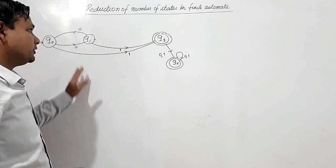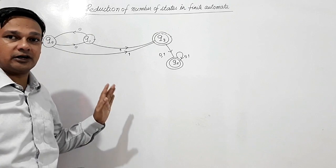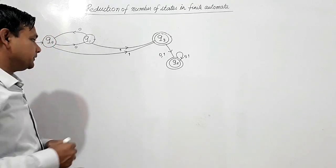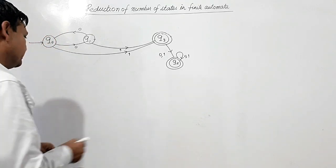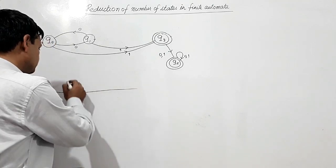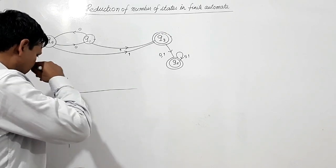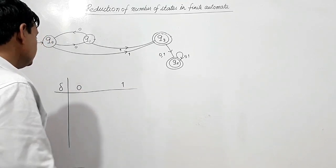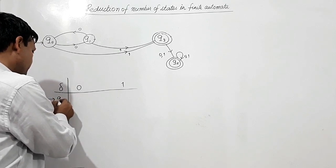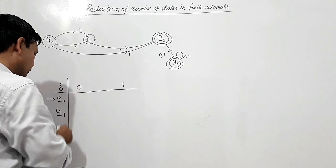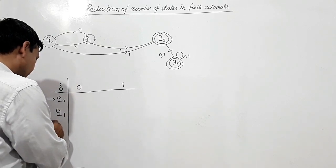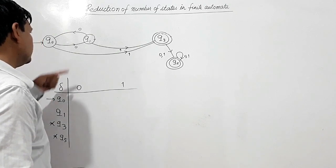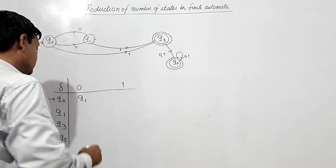Now we have four states: Q0 and Q1 are non-final states, and Q3 and Q5 are final states. We write the transition table for symbols 0 and 1. Q0 is the initial state and Q1 is a non-final state, while Q3 and Q5 are final states.